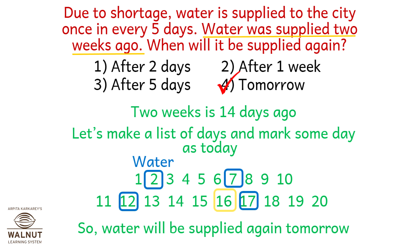The key point is that water was supplied 2 weeks ago, which is 14 days ago. Whatever the date might be, you calculate the interval which is 5 days apart. So in 2 weeks water will be supplied 3 times, and the next time will always be tomorrow for any date.